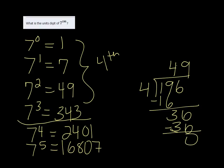So your remainder is what it's going to match up with. If it's a remainder of 0, then it's going to be the same as 7 to the 0. So the unit's digit is 1.